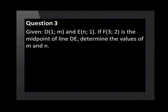You are given the points D with coordinates 1 and M, and point E with coordinates N and 1. If F with coordinates 3 and 2 is the midpoint of line DE, determine the values of M and N.